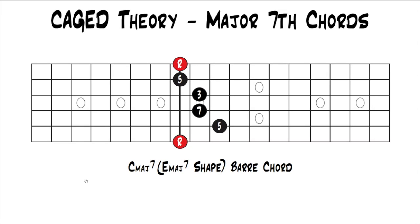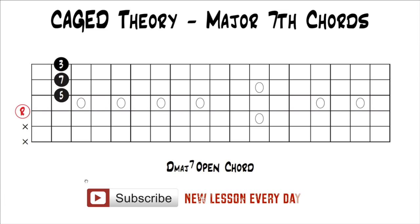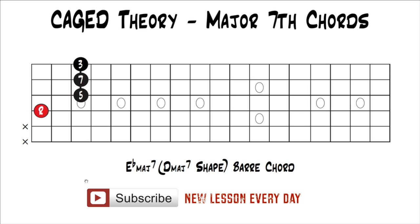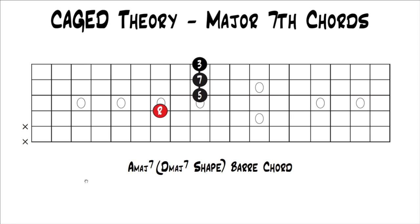Our last chord is D major 7, because we've gone through C, A, G, E — now we're on D. This is a D major 7 open chord. If we move that up half a step, we get an E flat major 7 bar chord using the D major 7 shape, because now our root is on E flat instead of D. This is a really common major 7 chord with a really nice sound, so definitely learn it if you don't know it. You can move that anywhere up the fretboard — if we move our lowest note to the 7th fret, that gives us an A major 7 bar chord using the D major 7 shape.